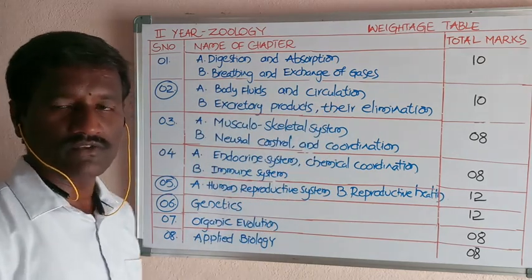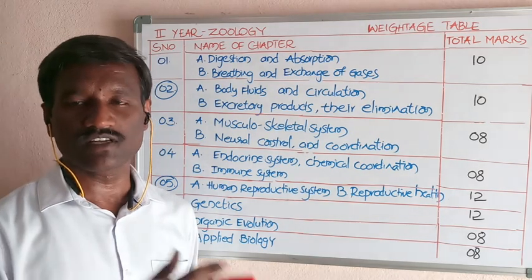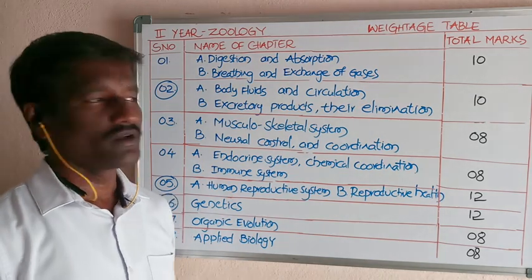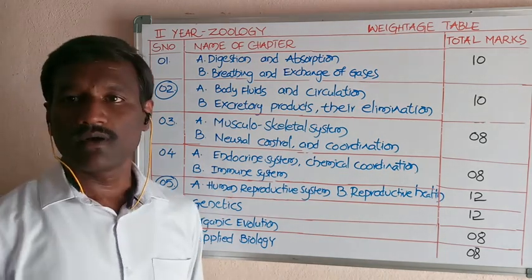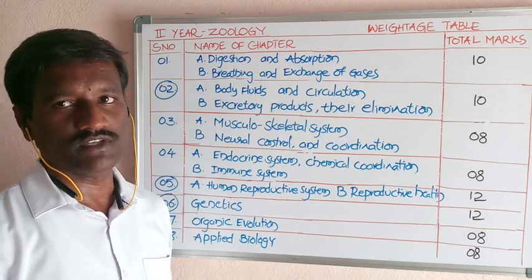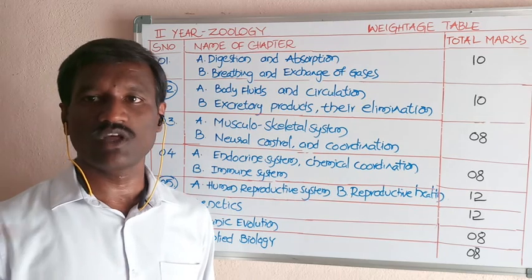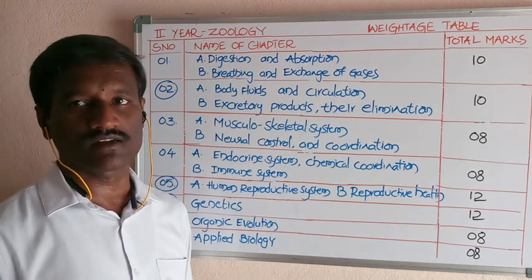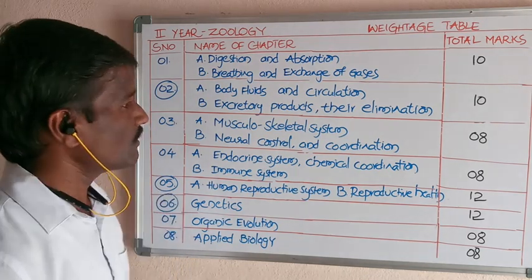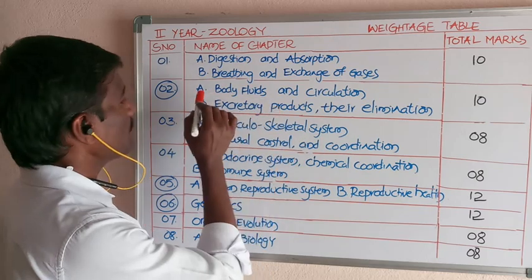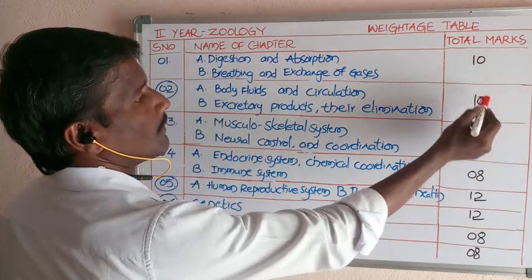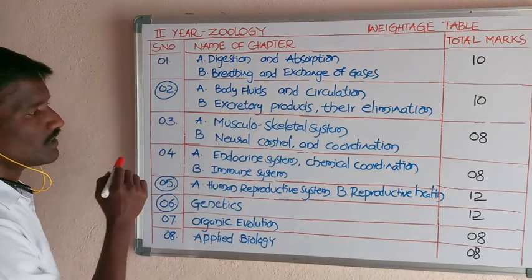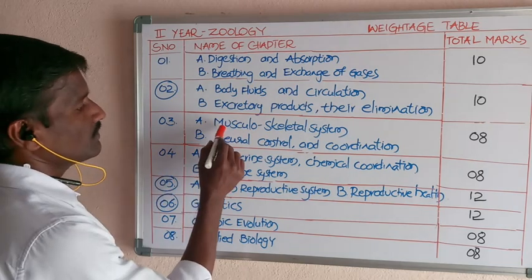Another topic in chapter 2 is excreted products and their elimination. After metabolism of food particles within the cell, excretory products such as ammonia, urea, and uric acid are formed. These are eliminated from the body with the help of excretory organs such as the kidneys. The weightage of the second chapter is 10 marks.